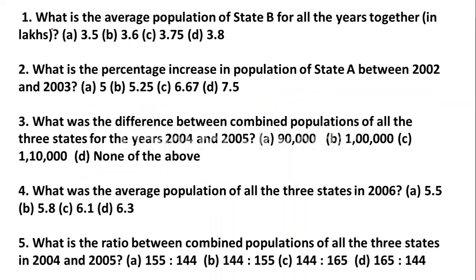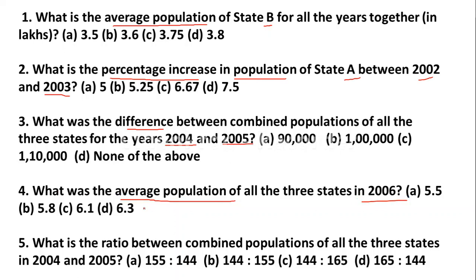Question 1: What is the average population of State B for all the years together? Question 2: What is the percentage increase in population of State A between 2002 and 2003? Question 3: What was the difference between combined populations of all three states for the year 2004 and 2005? Question 4: What was the average population of all three states in 2006? Question 5: What is the ratio between combined populations of all three states in 2004 and 2005?